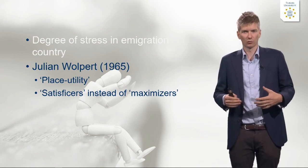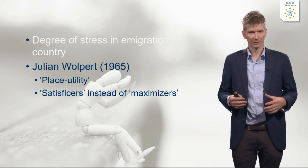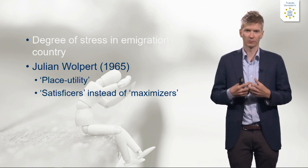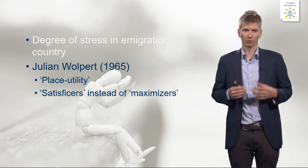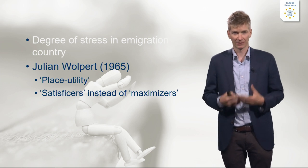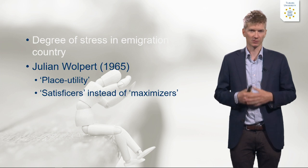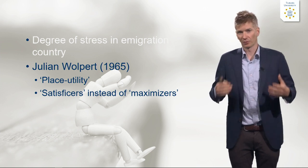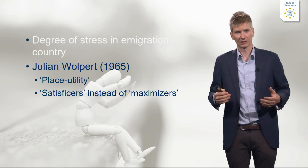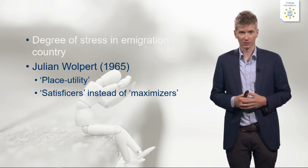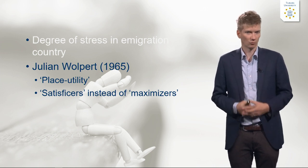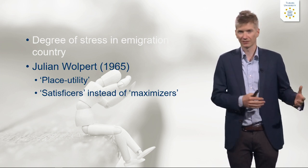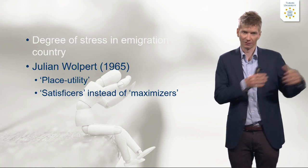But people do not generally move to whatever location. Julian Wolpert indicated that people tend to go to a place where they can have the highest utility — he introduced the concept of place utility, which means people move to a place where they can satisfy their needs. For example, if you move from the Netherlands because of the rain and go to Spain, southern European countries around the Mediterranean would offer high place utility. Bergen, the city with the most rain in Europe, would have very low place utility.